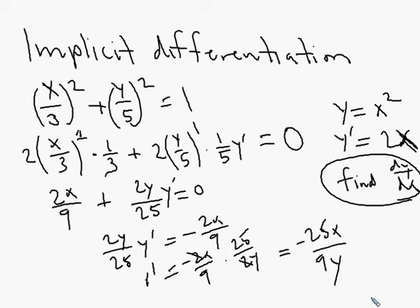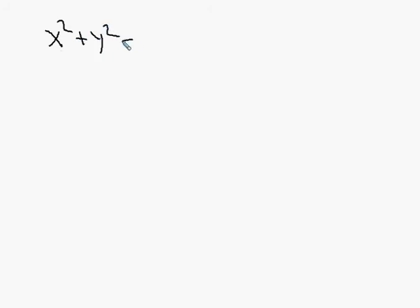Just to clarify — that was a separate example. Let's do another example of implicit differentiation: x² + y² = 25. This is the standard equation for a circle with a radius of 5 (the square root of the constant). Let's take the derivative implicitly.